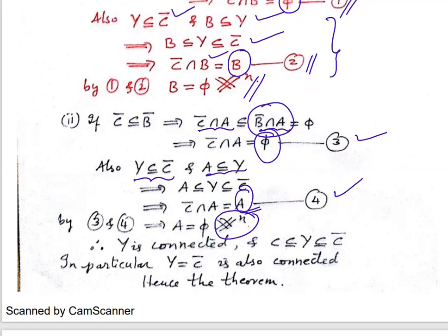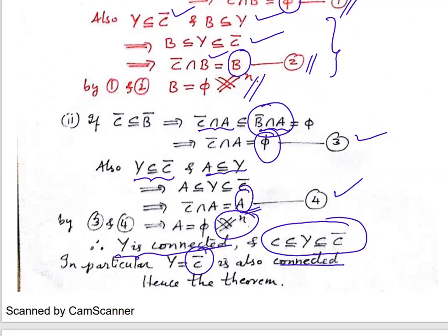We are getting contradictions in both cases because we assumed Y is disconnected. Therefore Y cannot be disconnected — it has to be connected. So any subset in between C and C-bar is connected. In particular, putting C-bar in place of Y, since C-bar is a subset of C-bar, C-bar is also connected. Hence the closure of a connected set is connected.